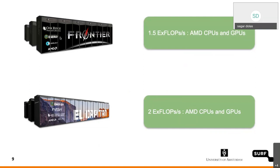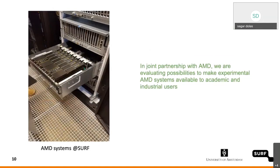Supercomputing sites have understood the potential of what AMD is offering. It's important that other sites try to learn and explore what these architectures can offer for the scientific computing community. In 2019, we entered into joint collaboration with AMD and started receiving systems from them. What we are trying here is to evaluate possibilities to make these experimental systems available for academic and industrial use, so that not only people inside SURF but also other users can try to understand what value it can bring for their research.